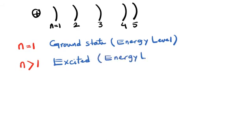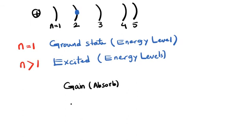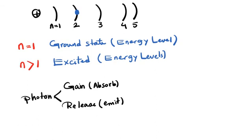For shells greater than 1, we call them excited shells, excited states, or excited energy levels. When we have photons in atoms, photons can gain or lose energy. They can absorb energy or they can release and emit energy. So two behaviors we may have for photons: they may gain energy and they may release energy.